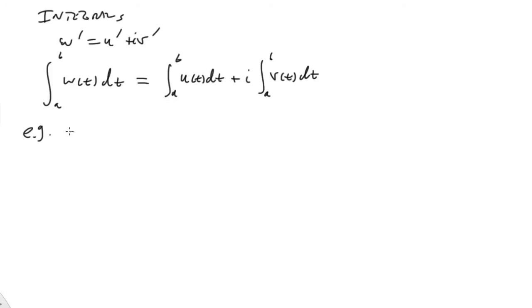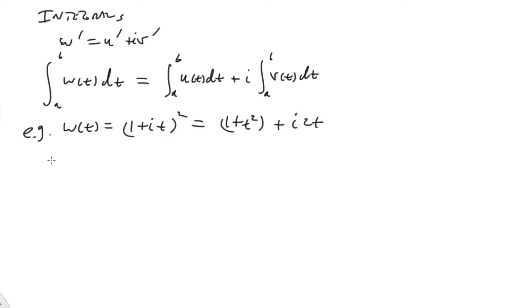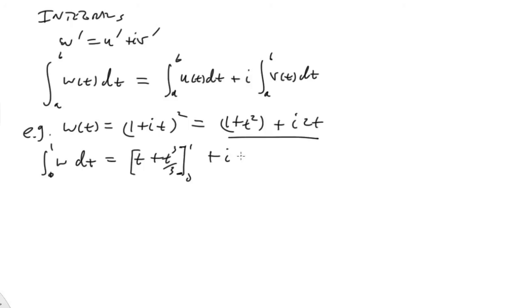Let's try an example. Take W(t) = (1 + it)², which we can rewrite as (1 + t²) + i·(2t). Taking the integral from 0 to 1: the real part gives t + t³/3 evaluated from 0 to 1, and the imaginary part gives t² evaluated from 0 to 1. So we get (1 + 1/3) + i·(1). That's the result — integrals are very straightforward for these types of functions.